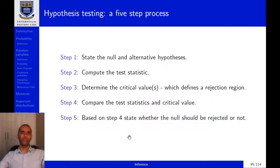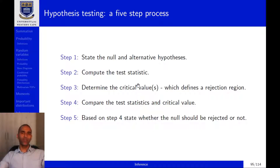Step three is to determine the critical values, and these critical values define a rejection region. It's best to describe this with a graph, which I'll do when we look at one of the examples. The critical value depends on the significance level we choose, and these values are simply read directly from the probability distribution tables.